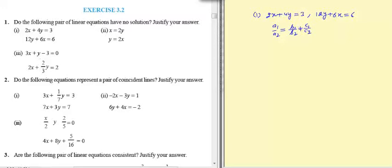Here a1 is 2 but a2 is not 12, it is 6. So a1 by a2 equal to 2 by 6, that is 1 by 3. And b1 upon b2 is 4 upon 12, it is also 1 by 3.